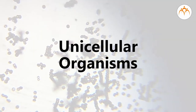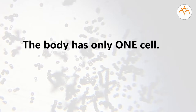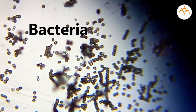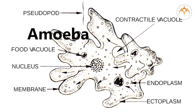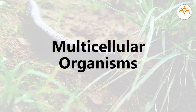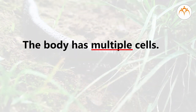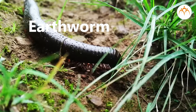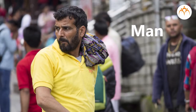Unicellular organisms: the body of the organism has only one cell. This character is primitive. For example, bacteria, amoeba, etc. Multicellular organisms: their body has many cells. They are complex and advanced organisms. For example, earthworm, man, etc.